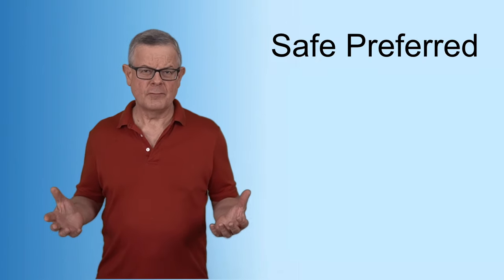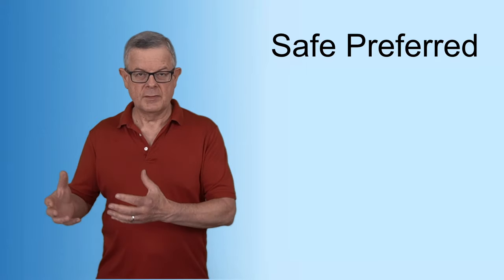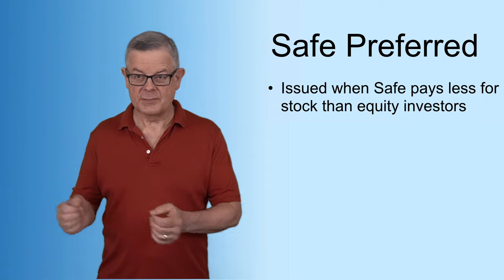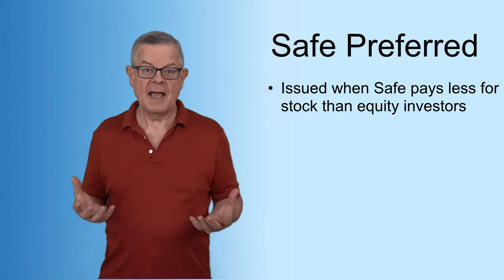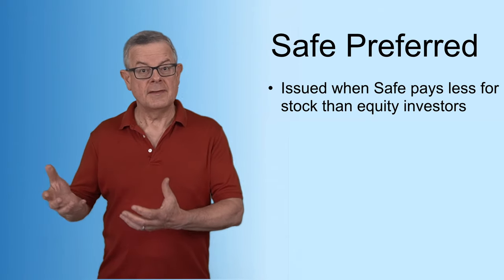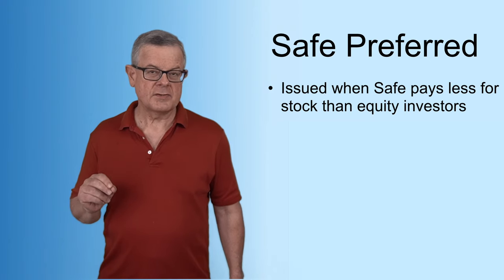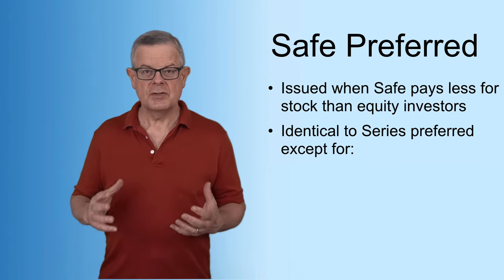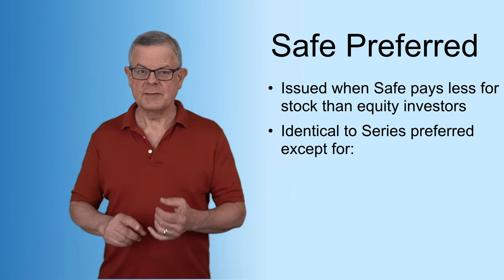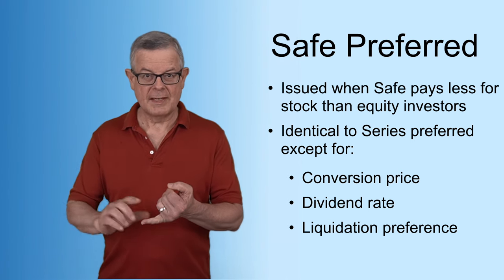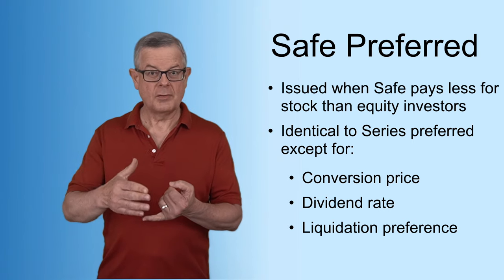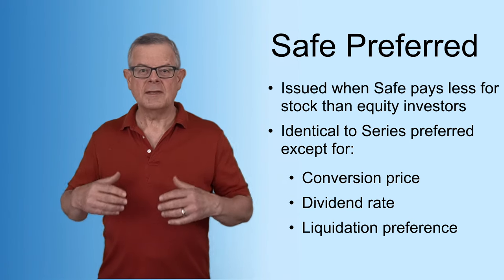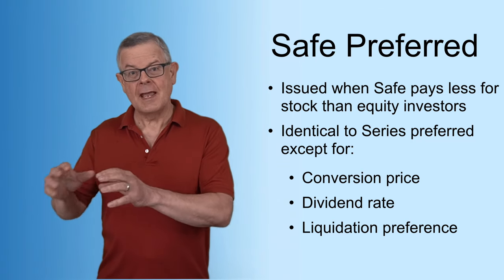What exactly is this SAFE preferred stock as opposed to the standard preferred shares that the equity investors receive? The SAFE preferred is issued when the SAFE investor is paying less than the equity investors. If they're paying the same — because, say, there was no discount and the cap didn't kick in — then they simply receive the same preferred shares that the equity investors receive. But when the SAFE investor is paying less for the stock, they receive this slightly modified version called the SAFE preferred. It's identical to the shares the equity investors receive with just three differences: the conversion price, of course, is different — determined by either the discount or the valuation cap; they get a different dividend rate; and a different liquidation preference, both based on what they actually paid for their shares.